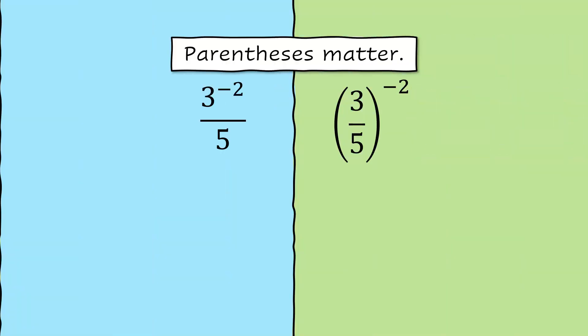Let's compare and see what happens when you add parentheses to a negative exponent and a fraction. In the first one, the negative 2 is the exponent on the 3, just the numerator, not the denominator. So we end up with 1 over 3 squared divided by 5. Simplifying that...